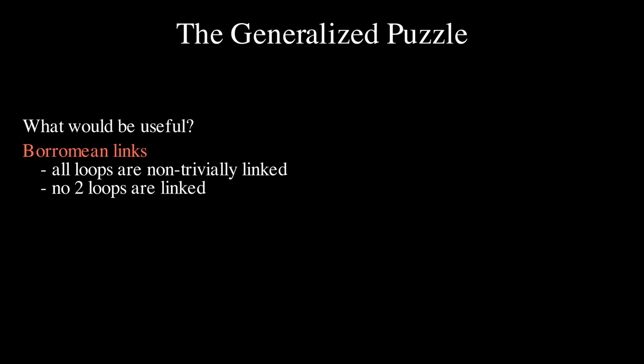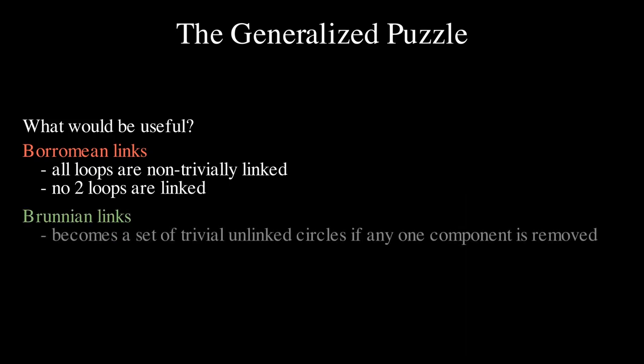Fortunately, we can handle it. Can you guess what notion presented today would be useful? Brunian links. Recall that a Brunian link is a non-trivial link that becomes a set of trivial unlinked circles if any one component is removed. This is exactly what we are looking for. Removing any nail leads to the falling of the picture.